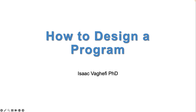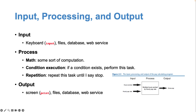In this video I will explain how to design a program with a focus on algorithms. Previously we learned that there's an input, processing, and output that occurs in computers. Input can come from keyboards, files, databases, web services — anything that provides input. Output could be anything displayed on the screen or recorded in files and databases, and in the middle is where processing happens.